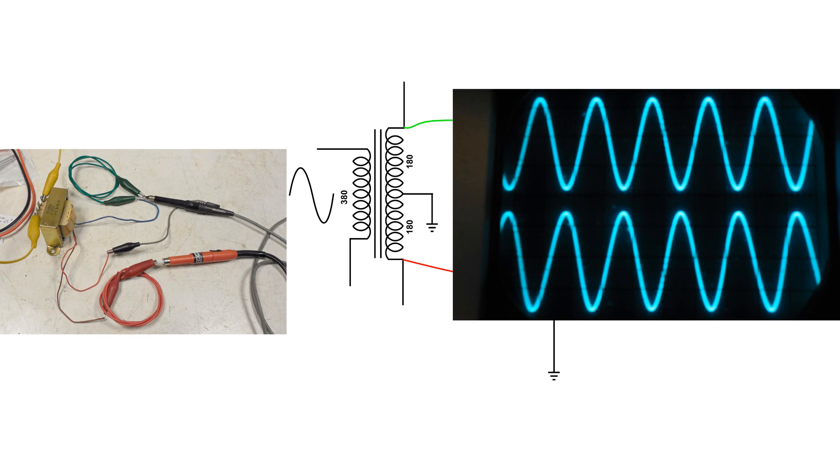And this is what the signal looks like on the scope. Channel 1 is on top. Channel 2 is on the bottom. But notice that at the top of the transformer, the green lead is 180 degrees out of phase on the other lead at the bottom, the red lead.